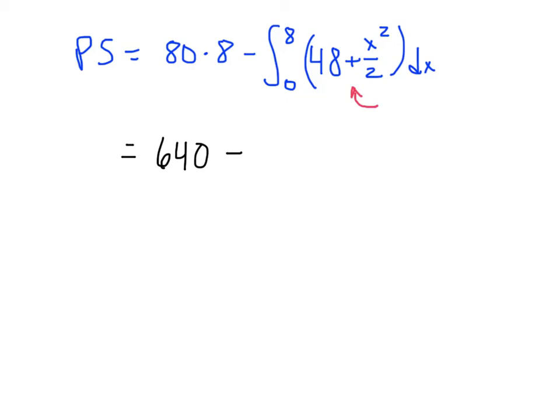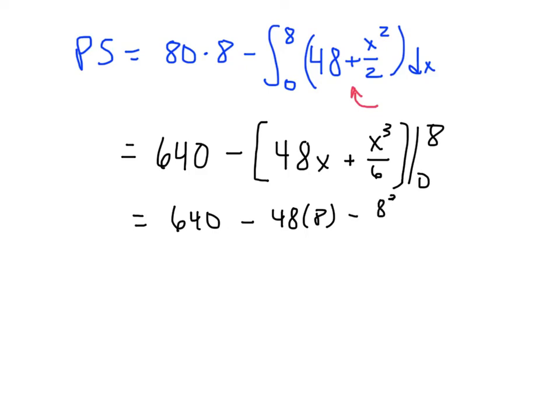We're going to subtract 48x plus x cubed over 6, and we evaluate that from 0 to 8. I've already cranked this out—this is 640. The zeros are going to be fine, but we're going to subtract off 48 times 8 and also subtract off 8 cubed over 6.